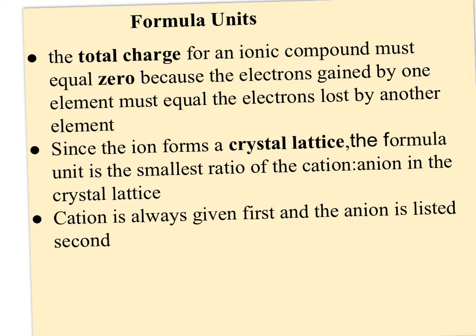Okay, so when determining formula units for ionic compounds, it's important to remember that the total charge for an ionic compound has to equal zero because the electrons gained by one element has to equal the electrons lost by another. One element is smaller and pulling the electrons off. The other one is larger and giving those electrons up.